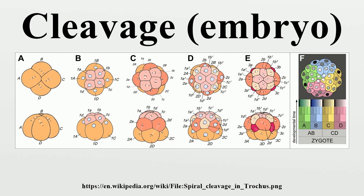Once specified, the D blastomere signals to surrounding micromeres to lay out their cell fates. In unequal cleavage, the first two cell divisions are unequal, producing four cells in which one cell is bigger than the other three. This larger cell is specified as the D macromere. Unlike equally cleaving spiralians, the D macromere is specified at the four-cell stage during unequal cleavage. Unequal cleavage can occur in two ways. One method involves asymmetric positioning of the cleavage spindle, occurring when the aster at one pole attaches to the cell membrane, causing it to be much smaller than the aster at the other pole.